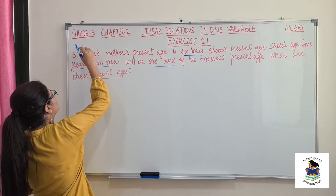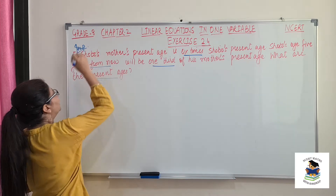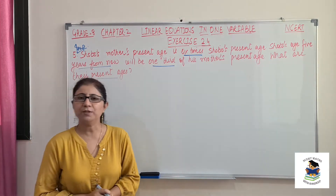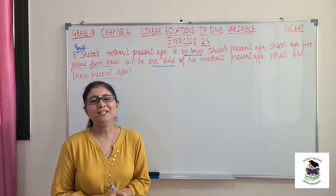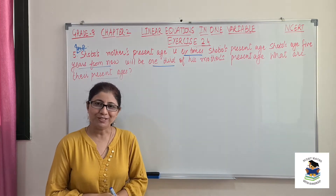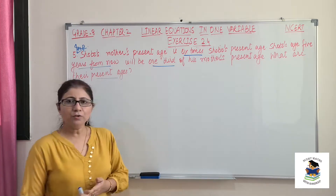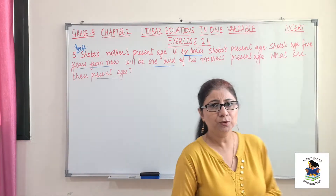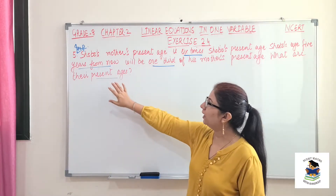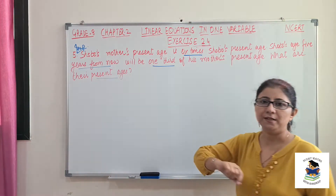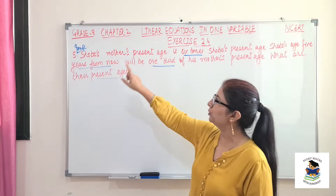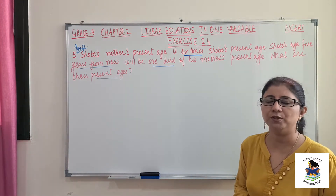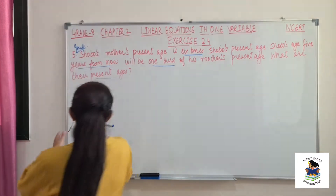This is a very important type of question. Age-related questions also come in your examination. So let's see how to solve this type of question. First of all, whatever we need to find, we will assume those ages. We need to find Shobo's mother's age and Shobo's age. So let's assume it.